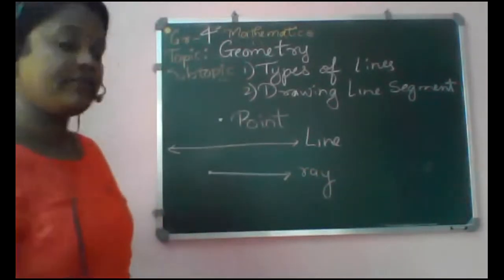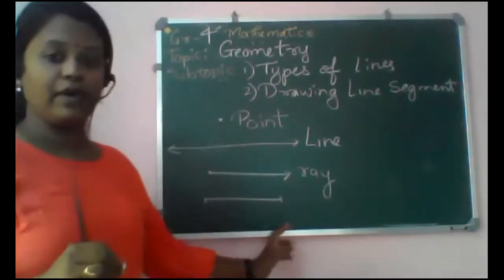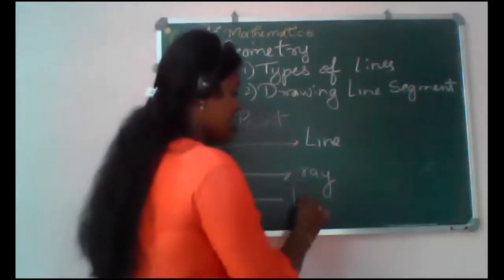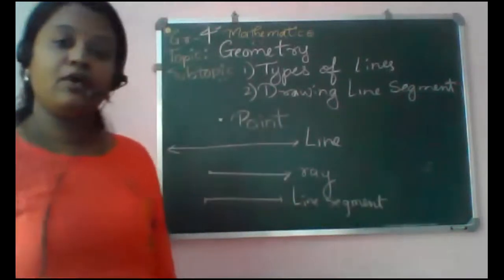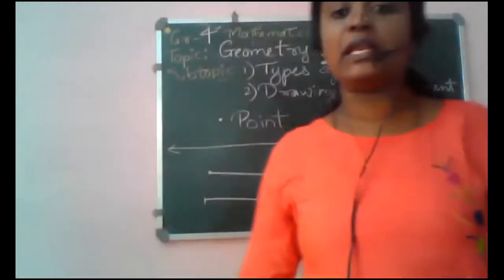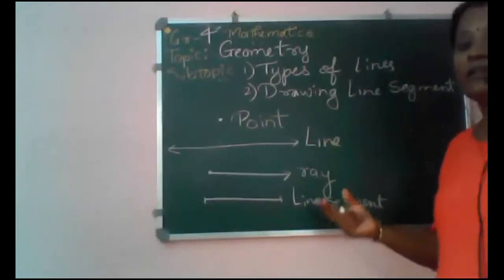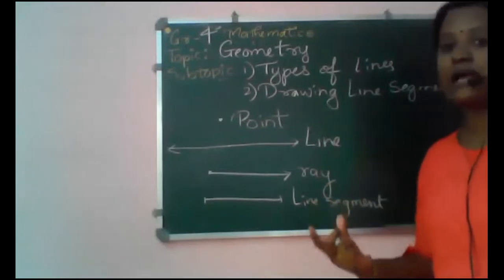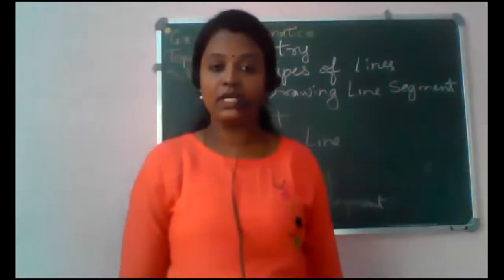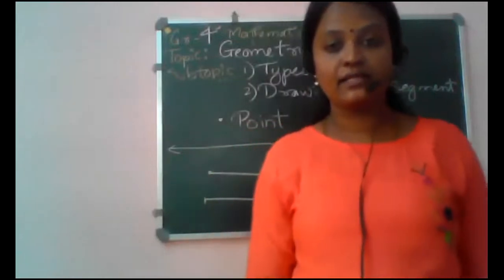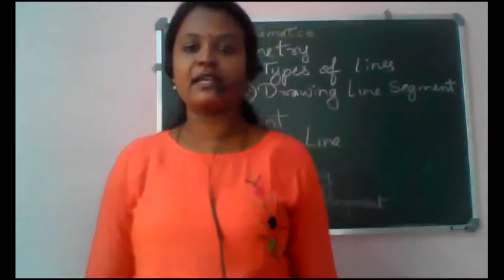A line segment is where both end points are given — this is called a line segment. There are a few facts about line segments, rays, and lines. A line segment has a particular limit — for example, you can draw a line segment of 6 cm. But a question would never say 'draw a line of 5 cm,' because a line doesn't have any limit.